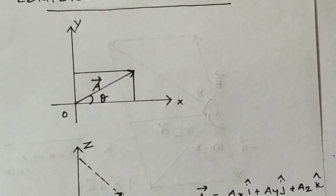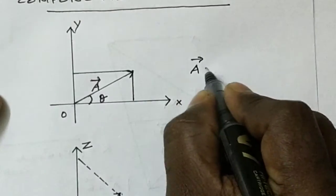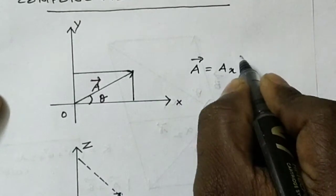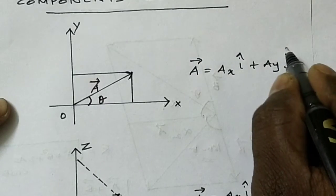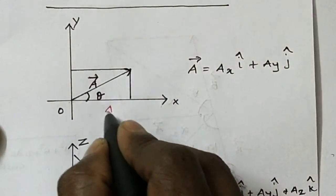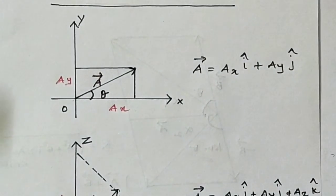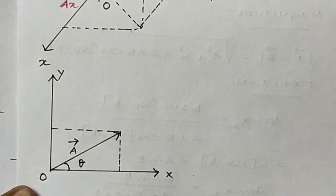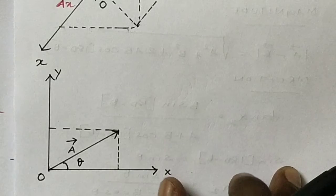Here it is the same concept. In 2D, A vector equals AX i-cap plus AY j-cap. So that is the 2-component representation. That means it has AX and AY. Suppose the A vector makes angle theta with the X axis — those are the AX and AY components of the A vector.